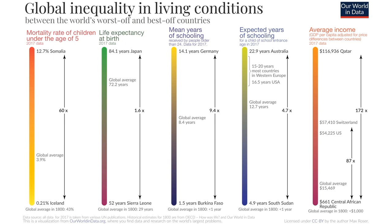The third bar shows mean years of schooling received by people older than 24 years — adult mean years of schooling based on 2017 data. The global average is about 8.4 years, meaning on average a person globally attains about 8 years of education. The worst-off country here is Burkina Faso, where the average mean years of schooling for adults over 24 is only 1.5 years, compared to Germany at about 14 years. The global average in 1800 was less than a year. This figure tells us about the distance between the best and worst countries while showing how much progress has been made in the last 200 years.